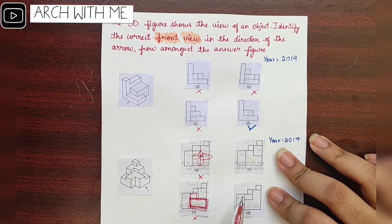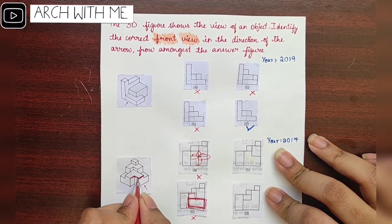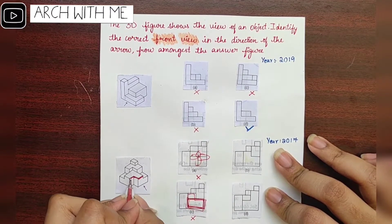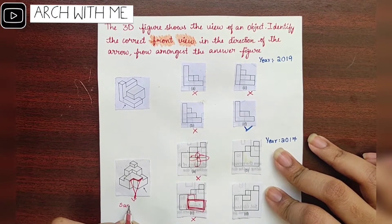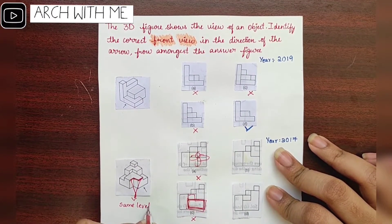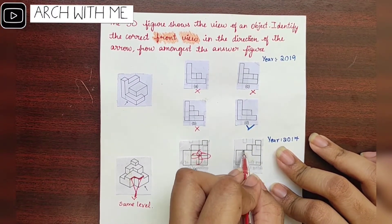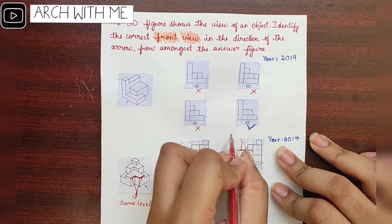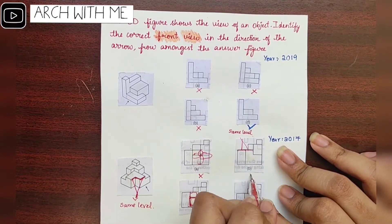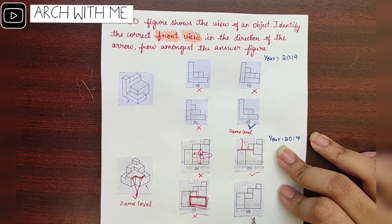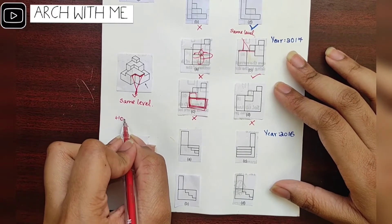Start observing — here you can see these two are at the same level. But in option D, it is totally different, so option D will be the wrong option.